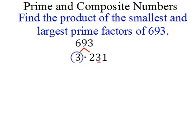Again, 2 won't go into it because it's odd, so I'll start with 3. 3 goes into 231 77 times. I circle 3, and now I've got to break up 77 into prime factors.